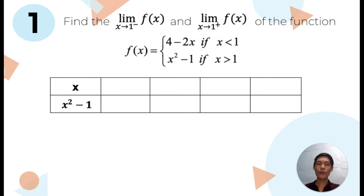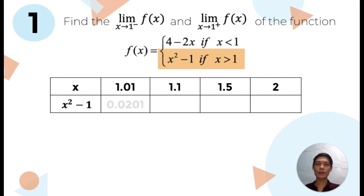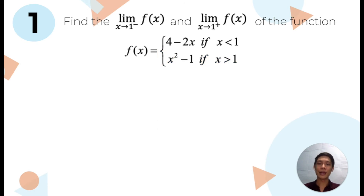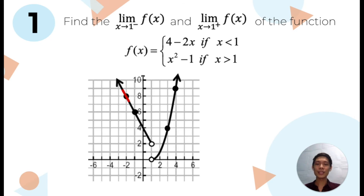Now, for the right-hand limit of the function, we will be using x values greater than 1. Evaluating the function using these values, we can say that the right-hand limit of the function is 0. Now, let's try graphing the function. As we trace along the graph towards x equals 1 from the left, we can see that it approaches 2. On the other hand, as we trace along the graph towards x equals 1 from the right, we can see that it approaches 0.